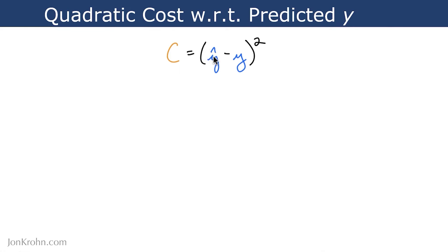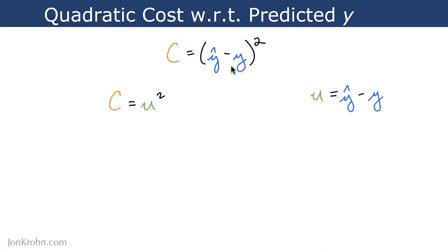So we're going to chain together a number of partial derivatives. This quadratic cost function is actually two nested functions. If we consider y-hat minus y to be equal to something — let's say u — this is our inner function in this nested function. And then the outer function is c equals u squared. By breaking our quadratic cost into these two simpler nested functions, it's even easier to calculate partial derivatives.